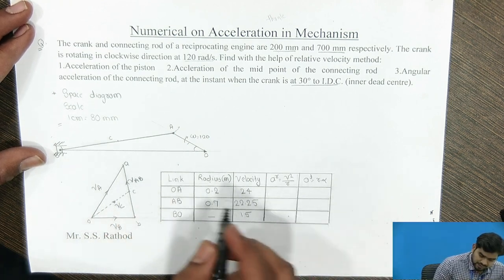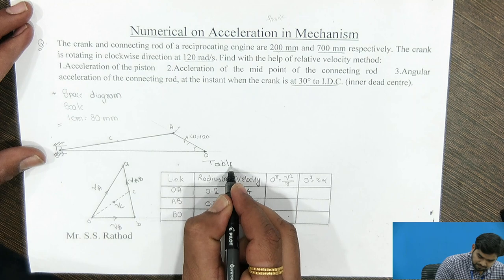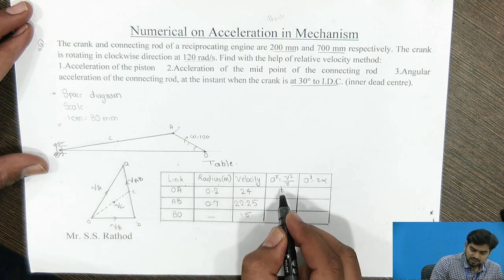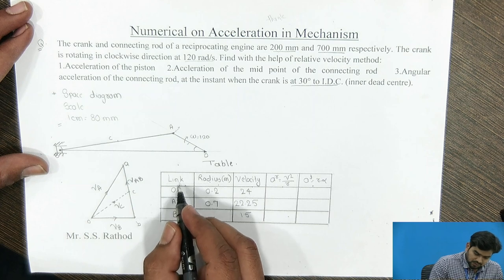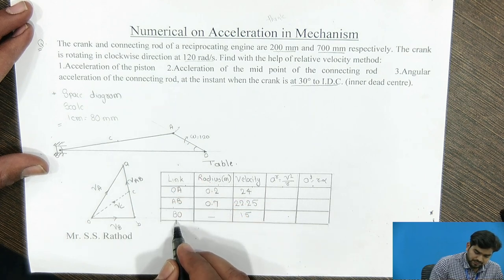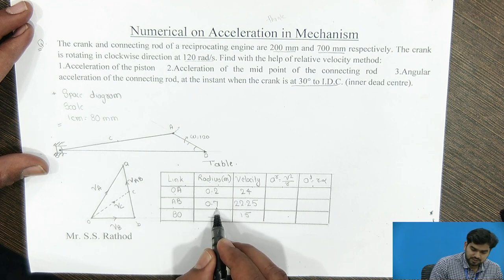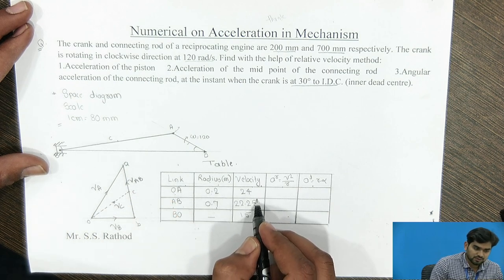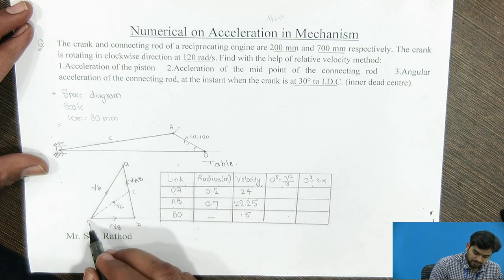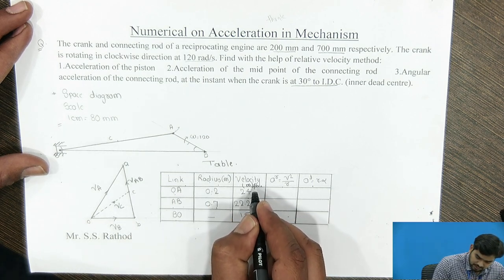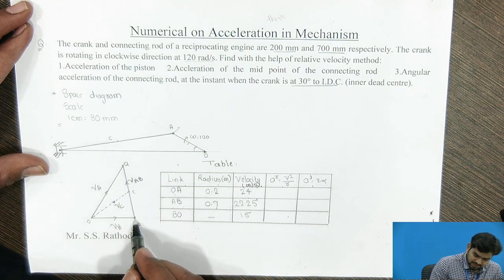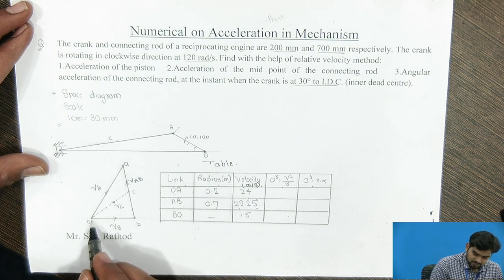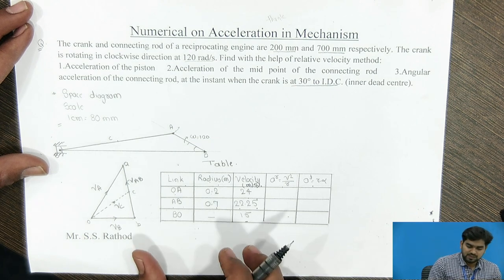By referring to this velocity diagram, we have formulated a table with columns: link, radius, velocity, radial component, and tangential component. The links taken are OA, AB, and BO. By measuring the velocity diagram, we get the velocity of OA as 24 m/s, velocity of AB as 22.25 m/s, and velocity of the piston as 15 m/s.